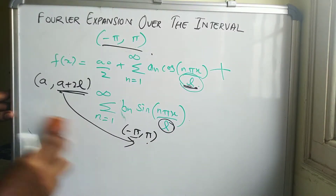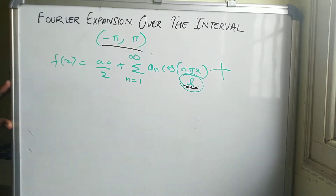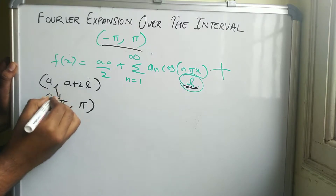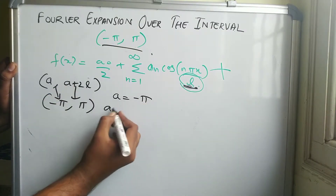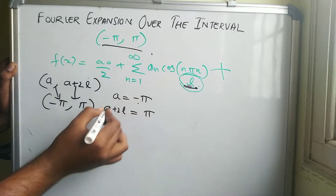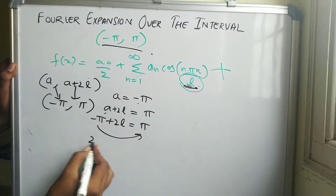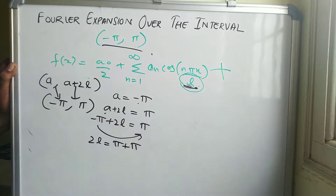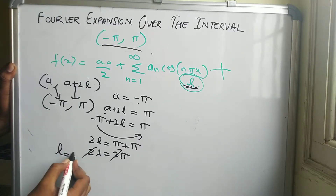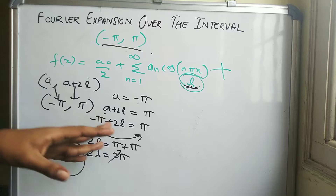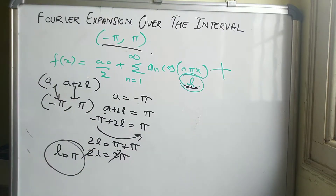So comparing a to a plus 2l with minus pi to pi, we get a equal to minus pi and a plus 2l equal to pi. Substituting a equal to minus pi: minus pi plus 2l equals pi, so 2l equals pi plus pi, giving 2l equal to 2 pi. Therefore l is equal to pi. This is how you calculate l — you compare the standard interval with the given interval.